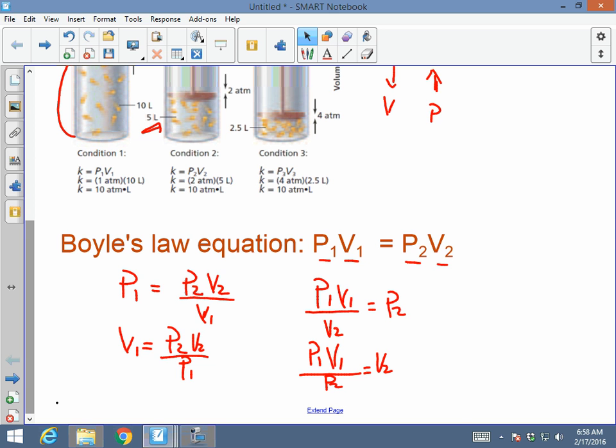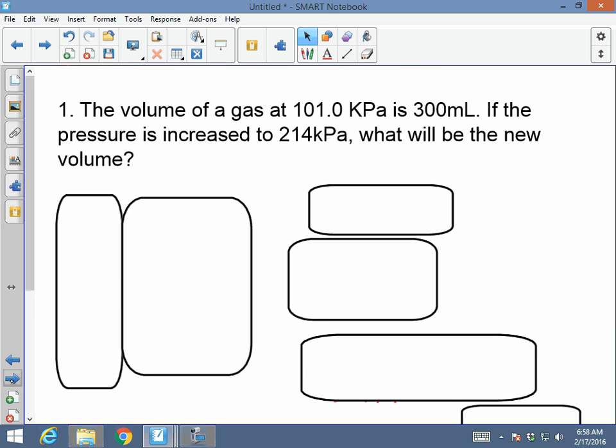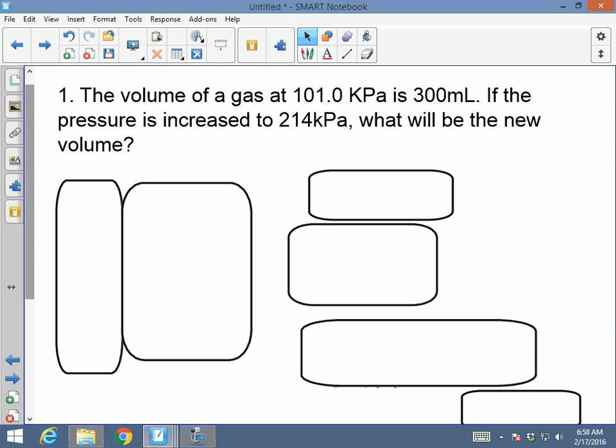So, let's look at a sample question and let's solve it out. The question says, the volume of a gas at 101.0 kPa—that's the pressure, not volume—the volume is 300 milliliters. The volume of a gas at a pressure of 101 kPa, that's 300 milliliters.